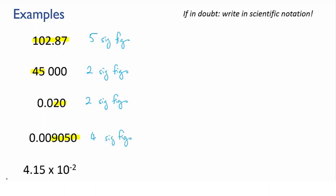Okay, last example. This number is written in scientific notation rather than standard notation. So let's rewrite it in standard notation. It equals 0.0415. And you should be able to see now that it has three sig figs because the first two zeros aren't significant.